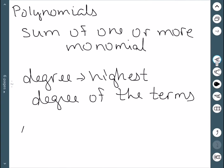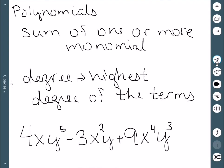For example, 4xy to the 5th minus 3x squared y plus 9x to the 4th y cubed. In this case, the first term has a degree of 1 plus 5 is 6. The second has a degree of 2 plus 1 is 3. And the third, 4 plus 3 is 7. So our degree would be 7.